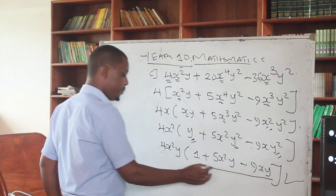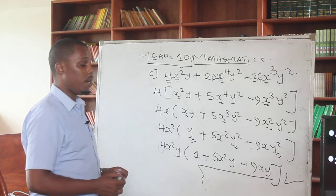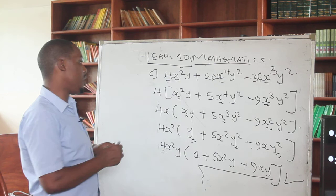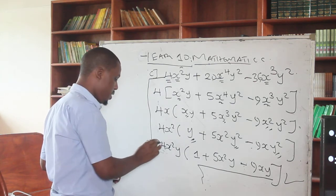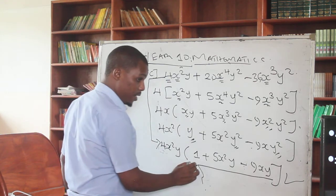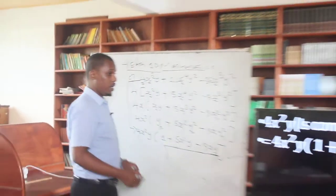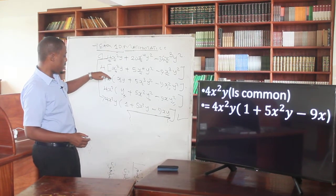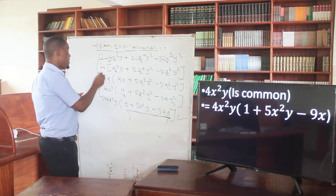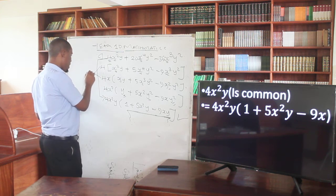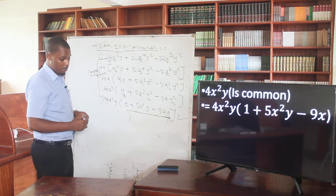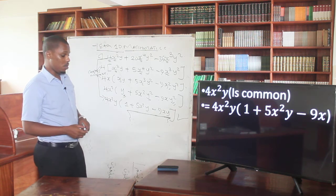Up to this stage, that is what we are talking about — factorization. Starting from the first step through to the final answer, you have to be careful with what you are doing. You have to follow those steps: step one, step two, step three. All these steps assist you in avoiding careless mistakes. If you try to skip directly to the answer, you might be tempted to make careless mistakes that will cost you marks.